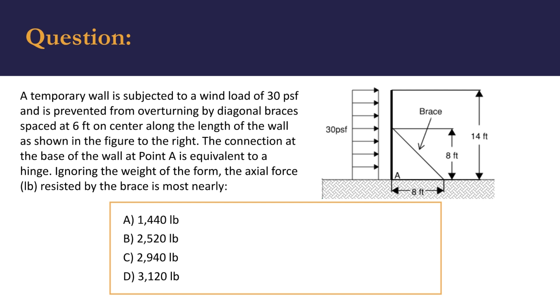So ignoring the weight of the form, we're asked the axial force in pounds resisted by the brace, and we're given a couple of options. It's hinted that we're going to have to round a little bit because we're asked what is most nearly either A, 1,440 pounds, B, 2,520 pounds, C, 2,940 pounds, and D, 3,120 pounds.